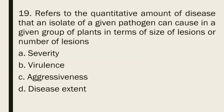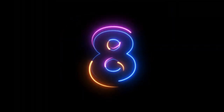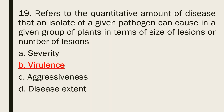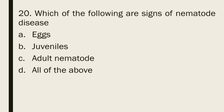Question 19: Refers to the quantitative amount of disease that an isolate of a given pathogen can cause in a given group of plants in terms of size of lesions or number of lesions: a. Severity b. Virulence c. Aggressiveness d. Disease extent. The correct answer is letter b, Virulence.